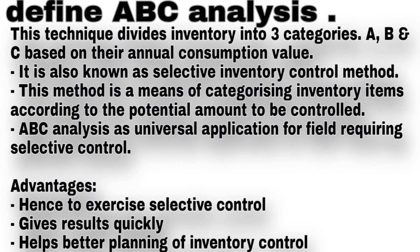Define ABC analysis. This technique divides inventory into three categories — A, B, and C — based on their annual consumption value. It is also known as selective inventory control method, a means of categorizing inventory items according to the potential amount to be controlled. ABC analysis has universal application for fields requiring selective control. Advantages: first, helps to exercise selective control; second, gives results quickly; and third, helps better planning of inventory control.